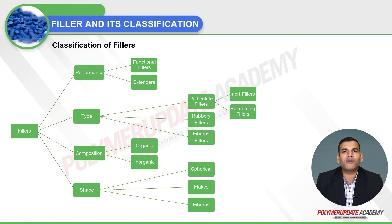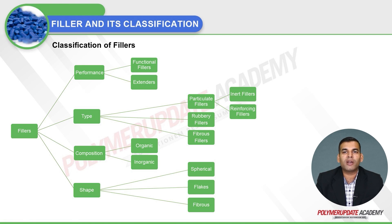This figure shows the classification of fillers into four categories. The first is based on performance, classifying fillers into functional fillers and extenders. The second is based on type, classifying into particulate, rubbery, and fibrous fillers. Particulate fillers are further classified into inert fillers and reinforcing fillers — inert fillers are extending in nature with no change in properties.